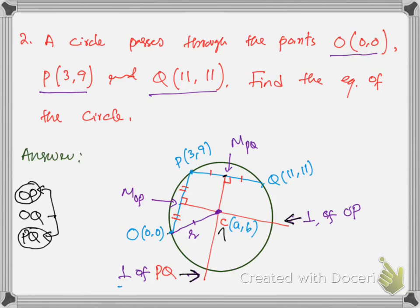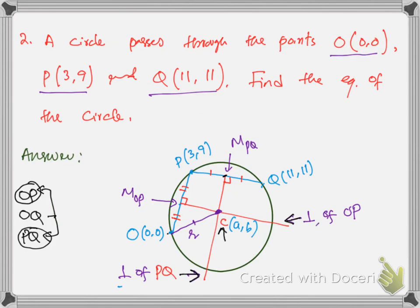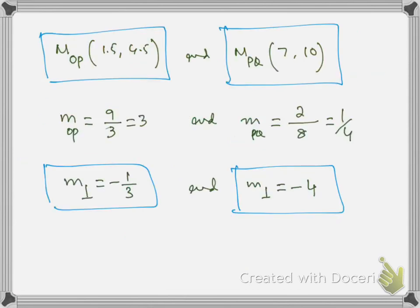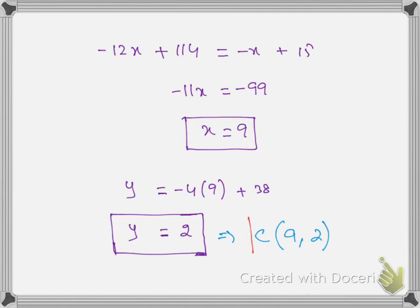Therefore, in order to get the center, we need to find the equation of these 2 bisectors. I have found the equation of both bisectors. For the bisector of OP, we need to first get the midpoint of OP, then the gradient of OP, and then the gradient of the perpendicular bisector. For bisector PQ, this is the midpoint of PQ, this is the gradient, and this is the gradient of the perpendicular bisector of PQ. This is the working for the equation of perpendicular bisector OP. This is the final equation of the bisector OP, and this is the equation of the bisector PQ. Now by solving these 2 equations simultaneously we can easily get the center.